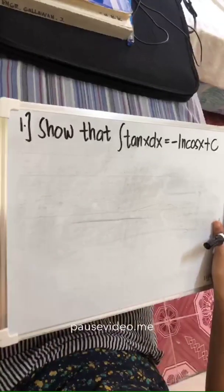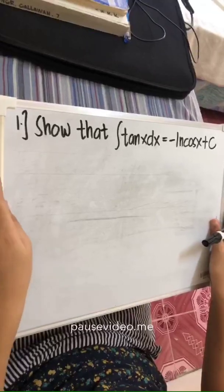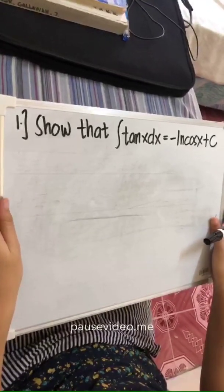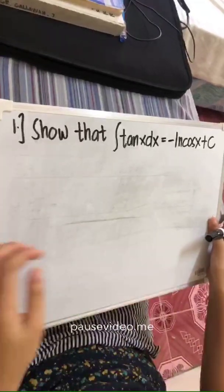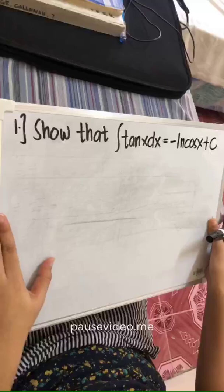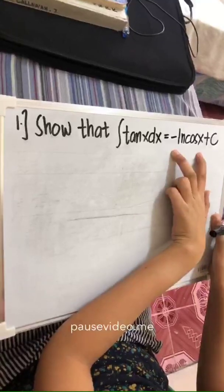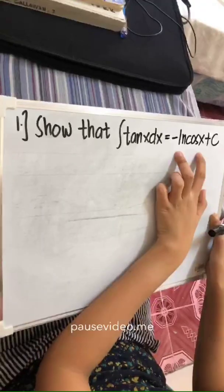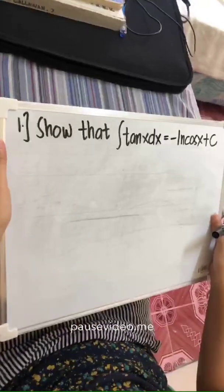Now we'll move on to an example of simple integration with trigonometric functions. We have here an example: show that the integral of tan x dx is equal to negative ln cos x plus c. From the last session, we know that the integral of tan x dx is equivalent to ln cos x plus c. But why is it that negative ln cos x is the integral of tan x dx? We're going to show that today.